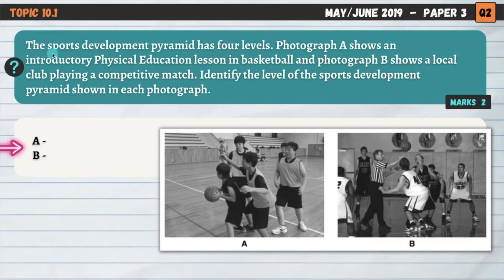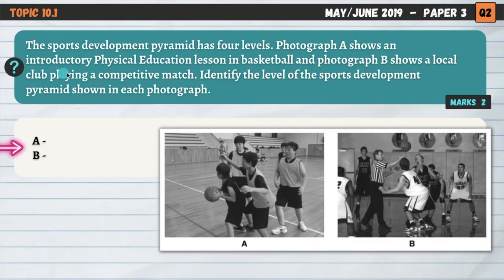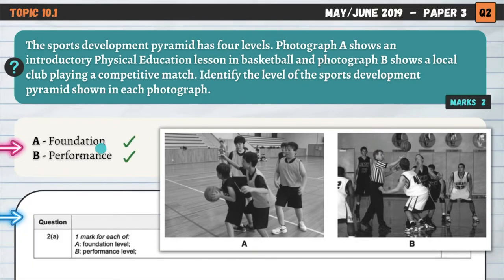The sports development pyramid has four levels. Photograph A shows an introductory physical education lesson in basketball; photograph B shows a local club playing a competitive match. Identify the level of the sports development pyramid shown in each photograph. For A, the key word is 'introductory' — students are being introduced to basketball in a PE lesson, so it must be the foundation stage. For B, 'competitive' is the key word, suggesting it's the performance level, not the participation level.